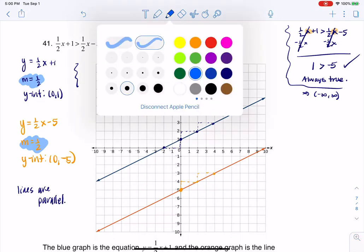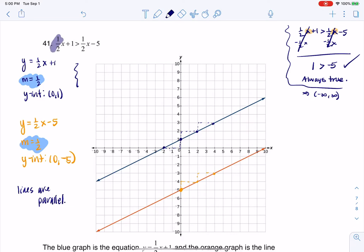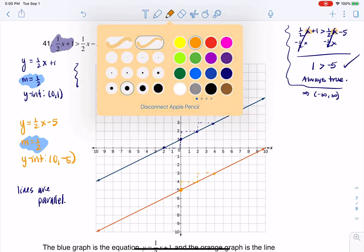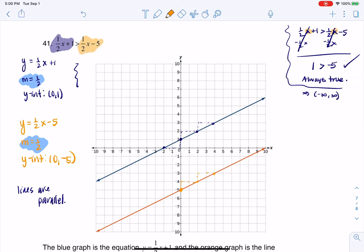If we go back to the original inequality, they're trying to say, hey, when is this purple line or blue line greater than the orange line? And the thing is, the purple line is always above the orange line.